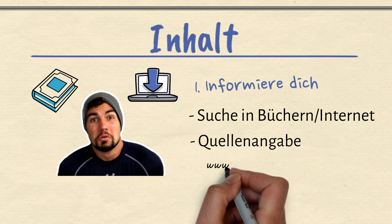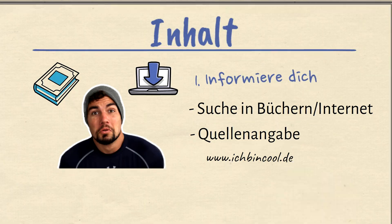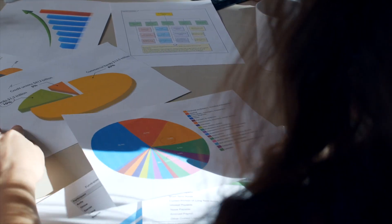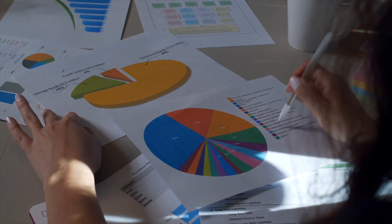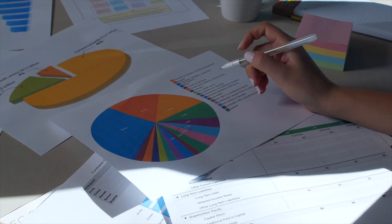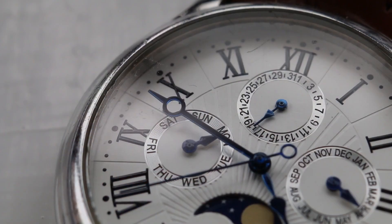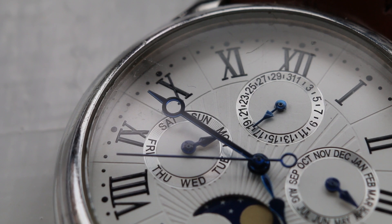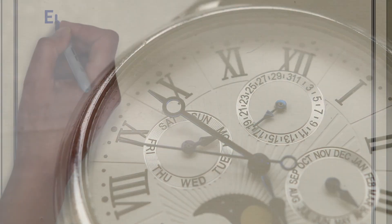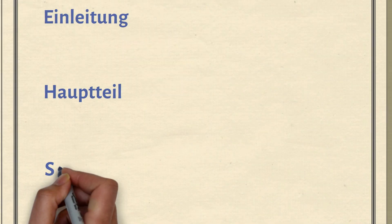Andernfalls wirst du am Ende vergessen, wo du die Informationen her hast. Sobald du die benötigten Informationen hast, musst du diese organisieren. Unabhängig davon, wie lang deine Präsentation ist, ob sie eine Minute, fünf Minuten oder 15 Minuten dauert, musst du sie in drei Teile gliedern: Einleitung, Hauptteil und Schluss.